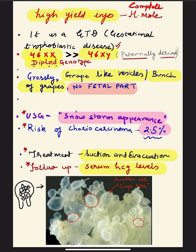In complete hydatidiform mole, the pathogenesis is that an empty ovum is fertilized by two sperms. The zygote formed is diploid, but the difference is that all chromosomes are paternally derived — unlike a normal zygote where half come from the mother and half from the father. Grossly, in the uterus, all of the conceptus is converted into grape-like vesicles, also known as a bunch of grapes appearance, and there is no fetal part at all.